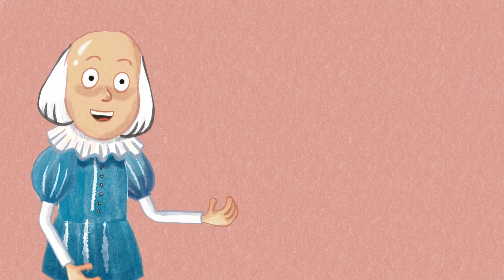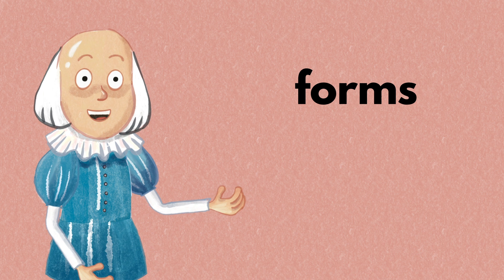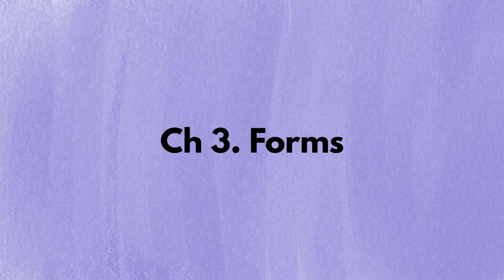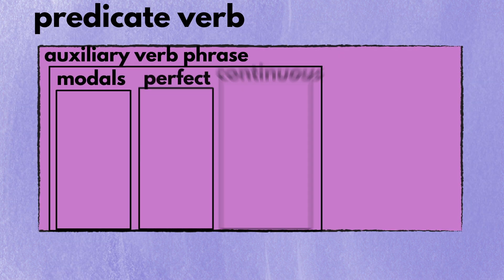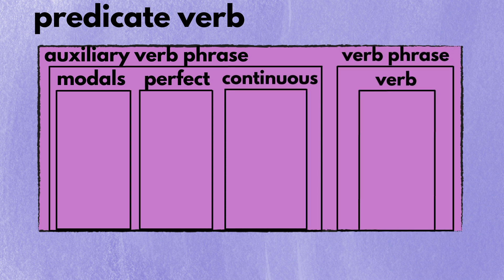That's everything for the meaning of the 12 tenses. Now let's talk more about the forms of the 12 tenses. Because different tenses use different parts within the predicate verb, we need to understand what a predicate verb is and what's inside a predicate verb.